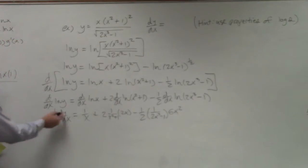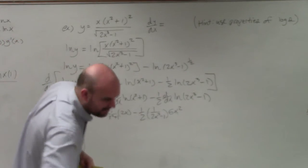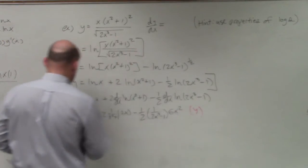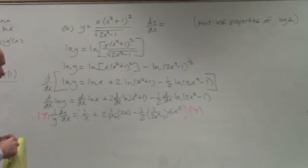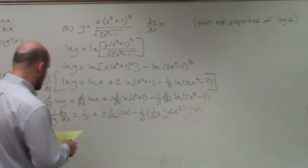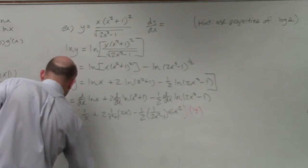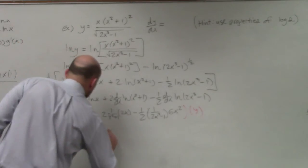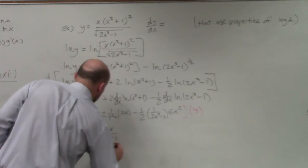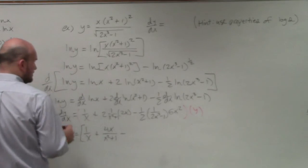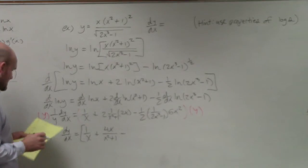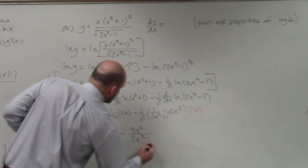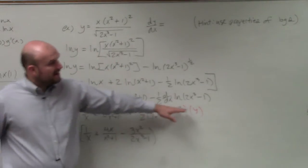And now to go ahead and solve for dy/dx, I need to multiply by y on both sides. And then I can go ahead and simplify all of this. So, I have dy/dx equals 1 over x plus 4x over x squared plus 1 minus... Let's see, we have a 2 in the bottom and a 6 up top, so that's going to reduce to negative 3x squared over 2x cubed minus 1.